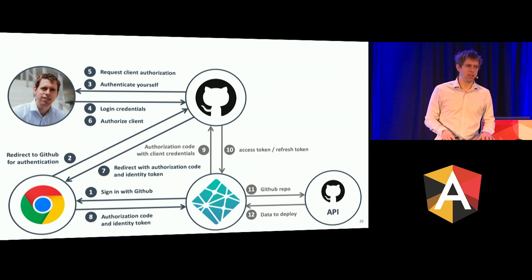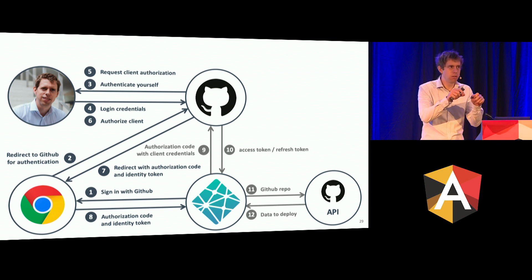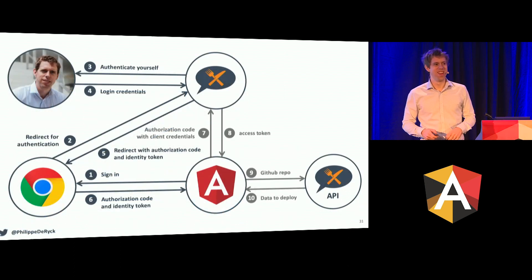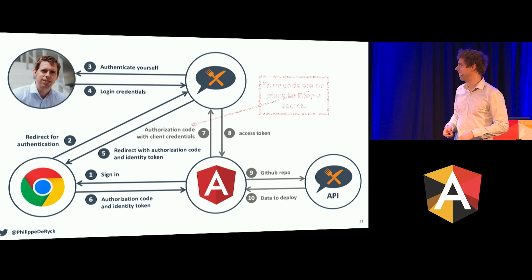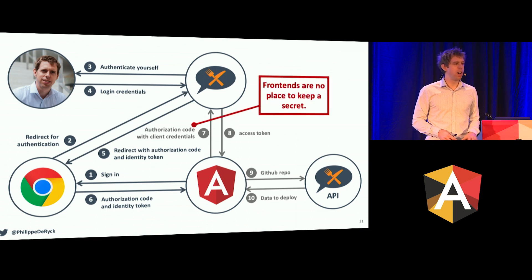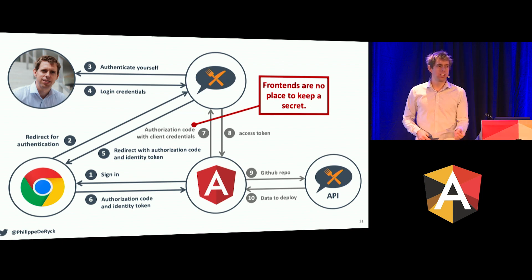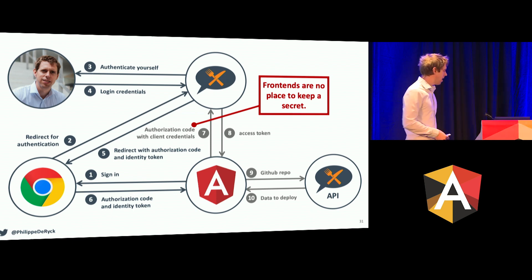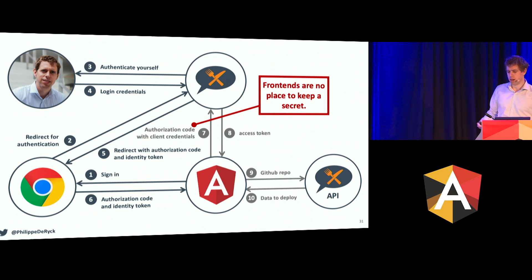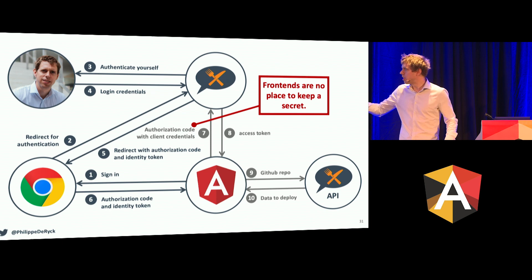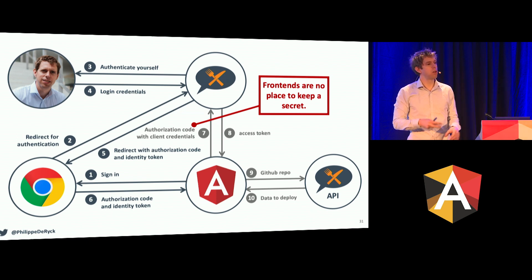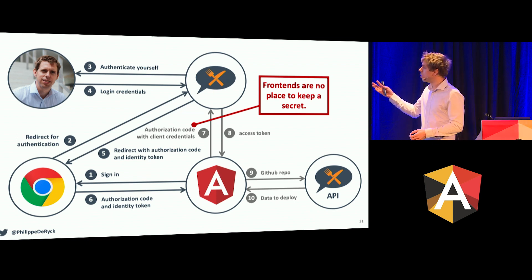Now let's move to the front-end. A front-end is not a good place to store secrets. Like in a JavaScript file: "secret is this string" — that's not awesome. Never ever store secrets in a mobile application either, because people can easily take it out. It's front-end code — everybody can inspect that. Even if you try to hide it, it's going to be really hard. So you cannot store a secret in a front-end. If you want to do this with Angular, you cannot authenticate in step seven here, which is kind of a problem. But there's a solution.